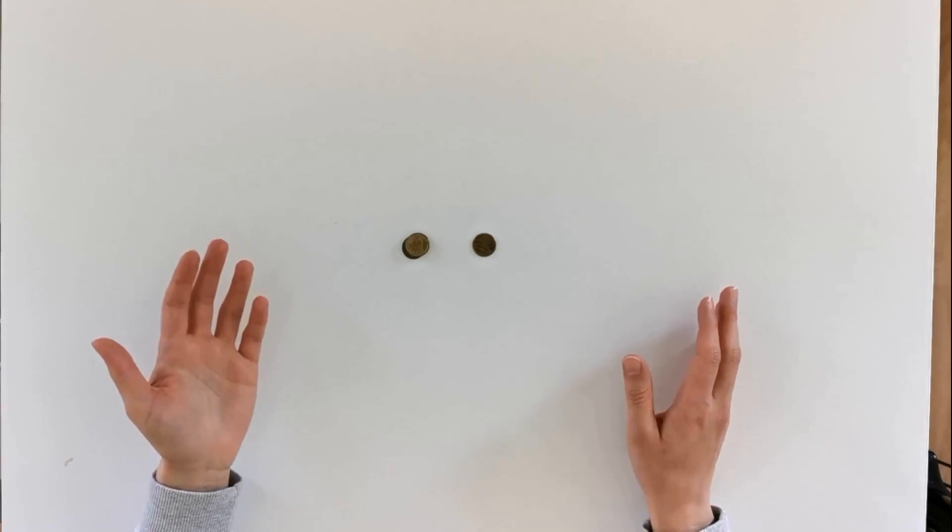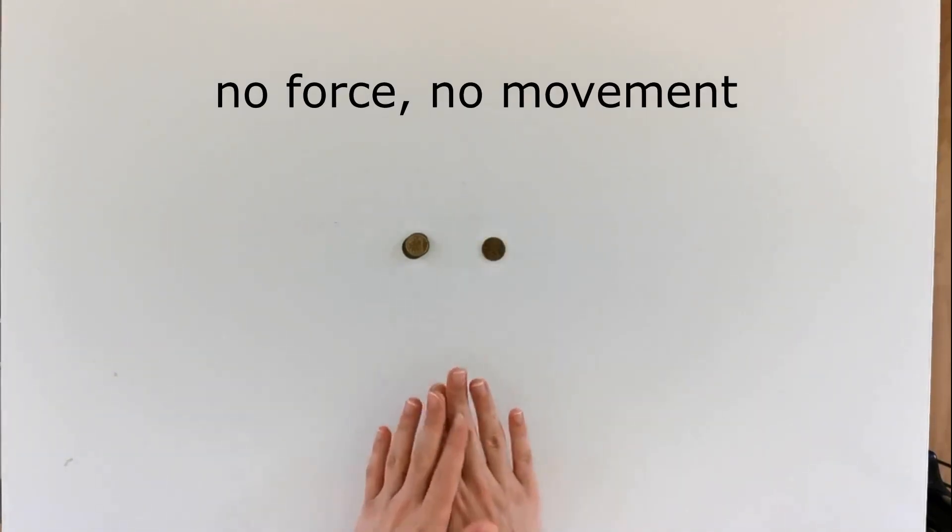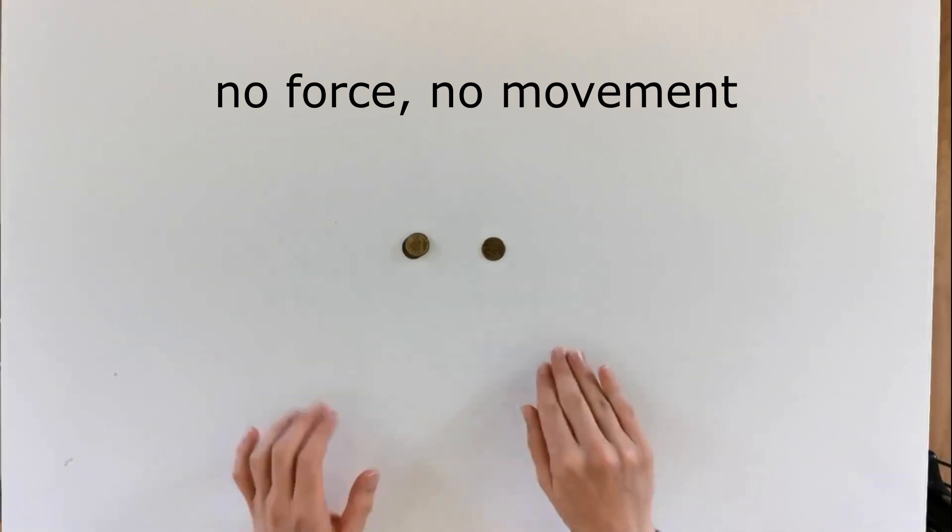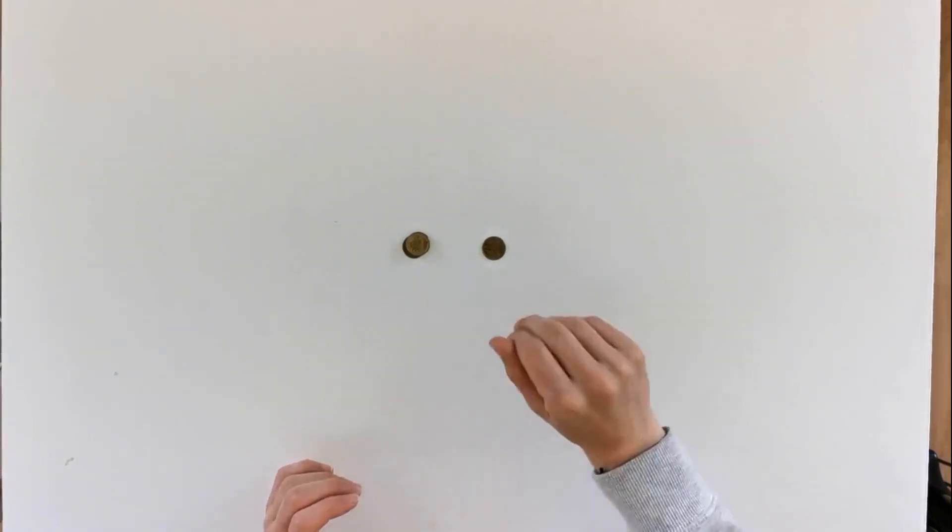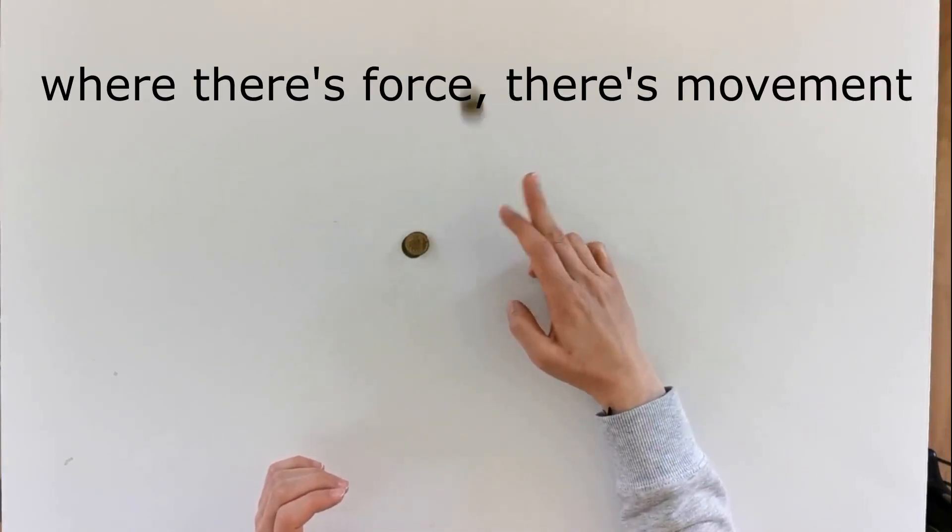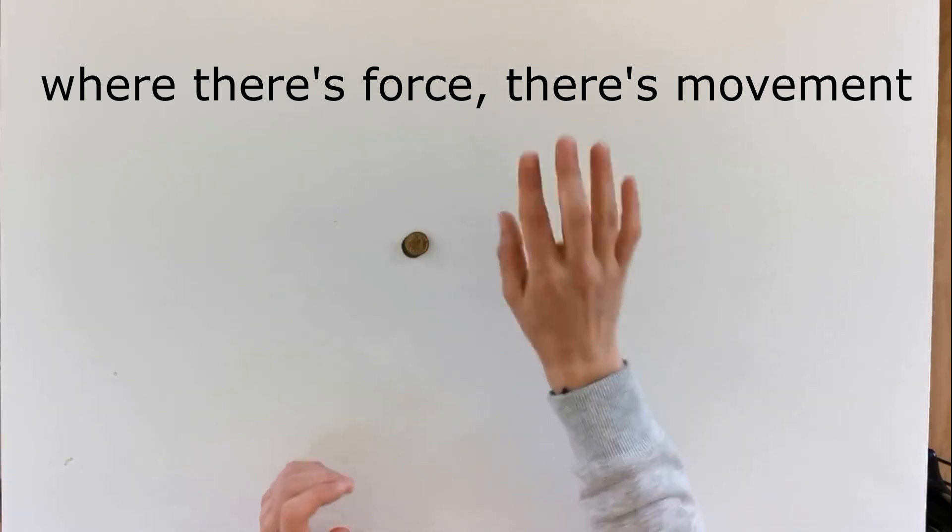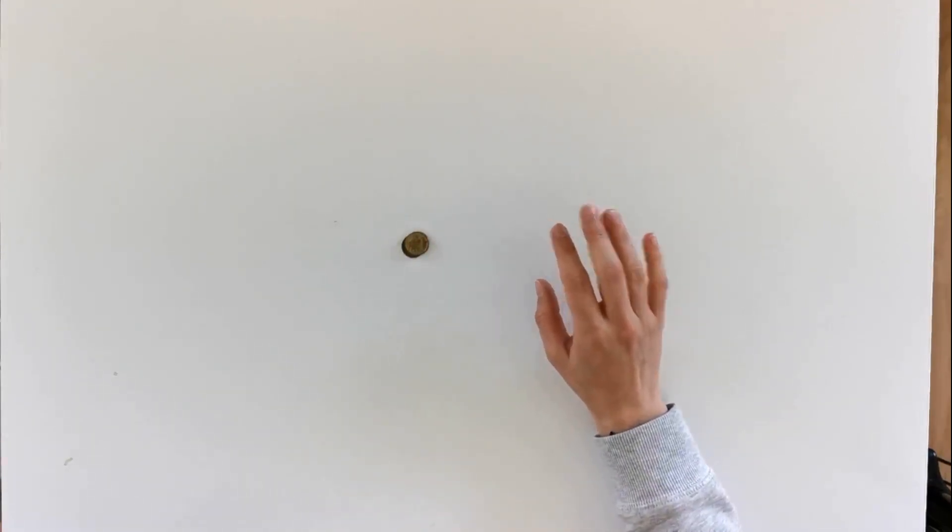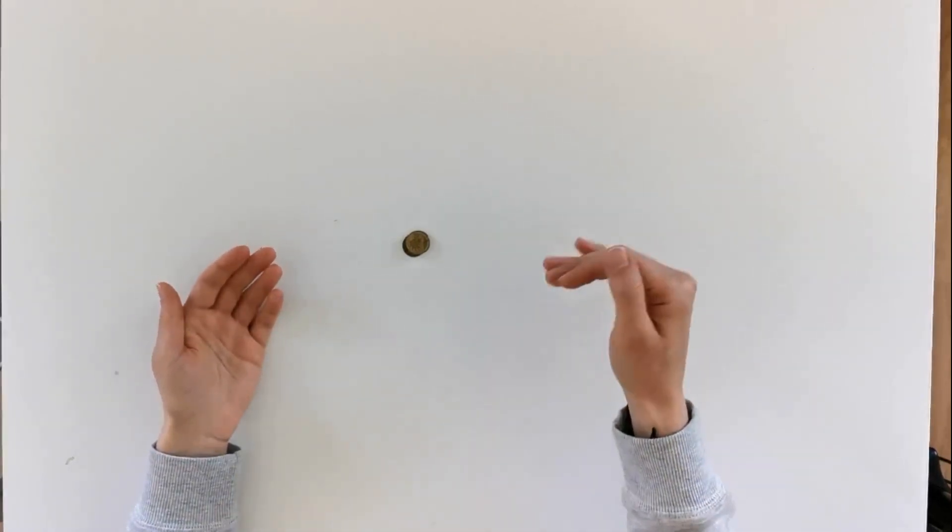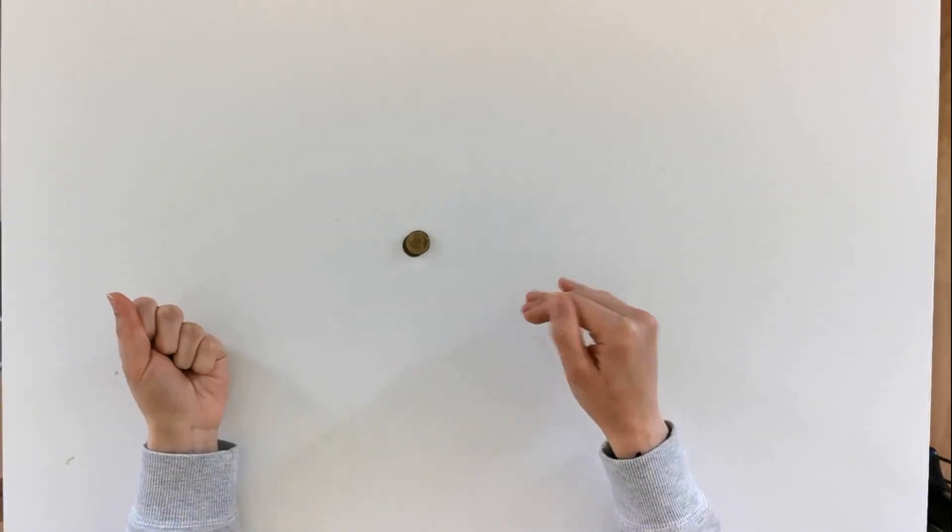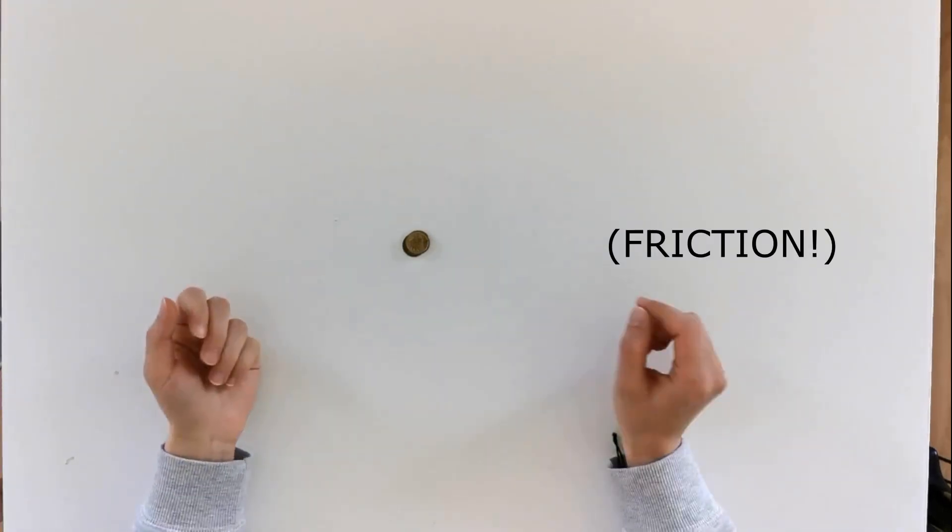So it means that if I'm going to put this coin here and I'm not going to use any force on that coin, it will not move. But if I use my force to, for example, push it, it will move and then it will stop. But not because it wanted to stop and not because it stopped by itself. It stopped because some outside force acted on it, and this outside force you already know is called friction.